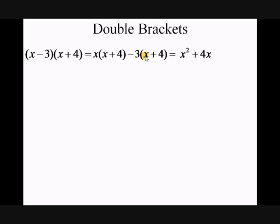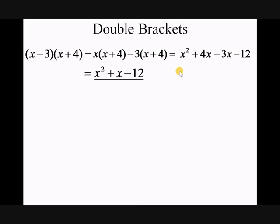Then when I multiply the second bracket out I get minus 3x minus 12. Looking at that, I can see the two middle terms are both in x and therefore I can simplify: plus 4x minus 3x becomes 1x, which of course I just write as x. So I get my answer: x squared plus x minus 12.